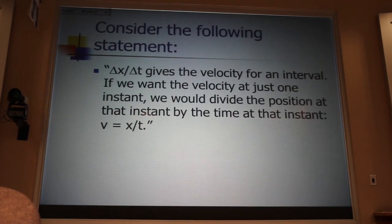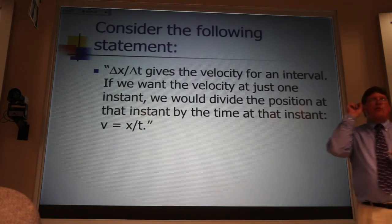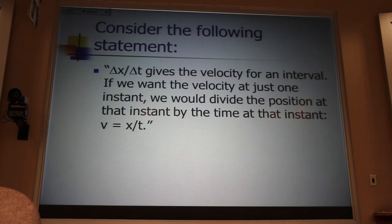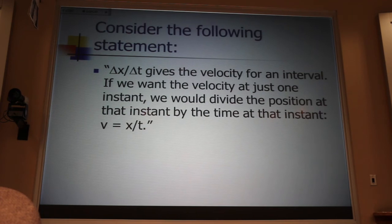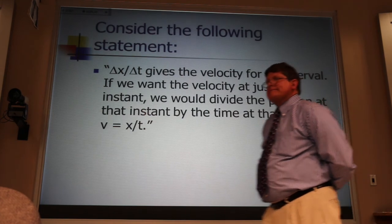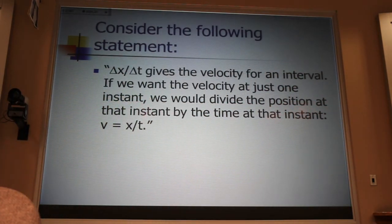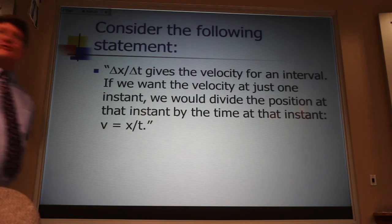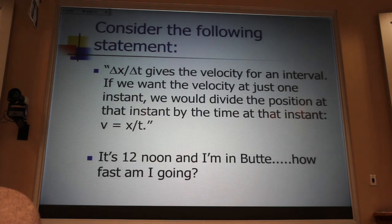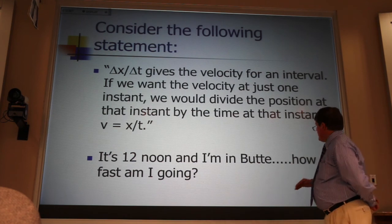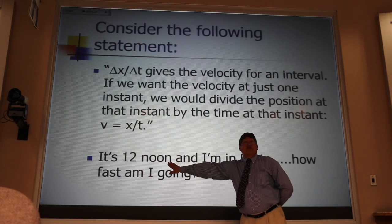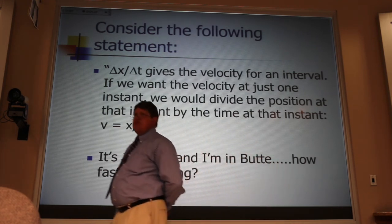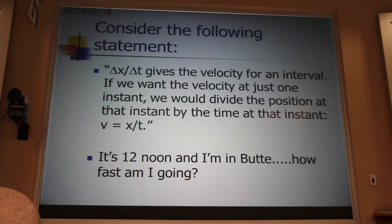Consider this statement. Delta x over delta t gives you the velocity for an interval of time, delta t. If we want the velocity at just one instant, one t, we would divide the position, the x of that instant, by the time of that instant, we would just take x over t. Is that wrong, or is that sick and wrong? Or is it right? It's hard to prove something right, but it's really, really easy to prove something wrong. All you need is one counterexample. Suppose I were to tell you, it's 12 noon and I'm in Butte. How fast am I going? Butte is a position. It's an x. 12 noon is a time. It's a t. If this were true, my velocity would be Butte over noon. I'm not sure how fast that is, but I'm sure it's ugly.